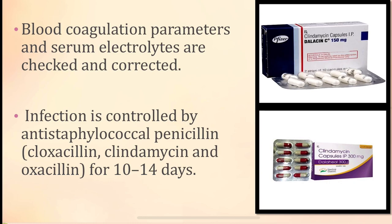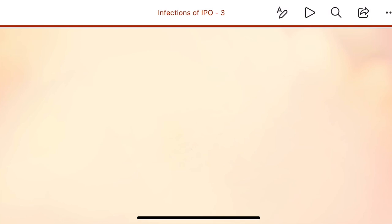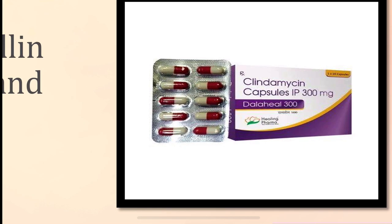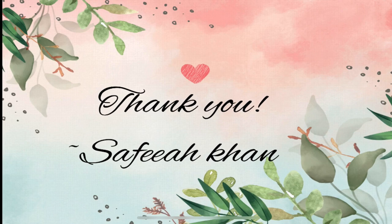Infection is controlled by anti-staphylococcal penicillins — cloxacillin, clindamycin, and oxacillin — used for around 10 to 14 days. The tampon should be removed, and patients should be advised to use cotton tampons as they are the safest. The mortality following toxic shock syndrome is around 6 to 10 percent.